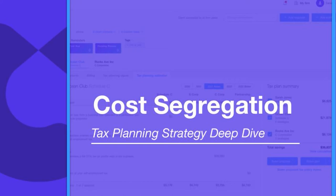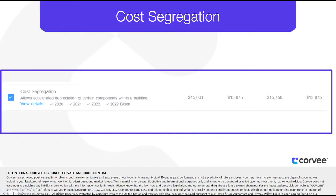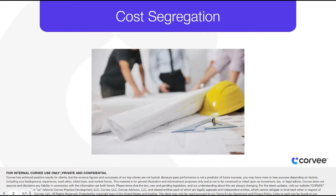Let's talk about a business tax saving strategy called cost segregation that would allow accelerated depreciation of certain components within a building. Cost segregation is a commonly used tax planning strategy that allows companies and individuals who have constructed, purchased, expanded, or remodeled real estate to increase cash flow by accelerating depreciation deductions and deferring federal and state income taxes.